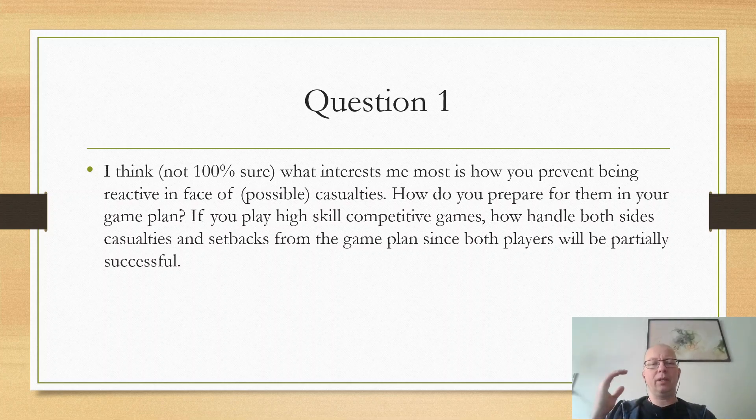I think, I'm not 100% sure, that what interests me the most is how you prevent being reactive in the face of possible casualties. How do you prepare for them in your game plan? And how do you play high-skill competitive games? How both sides have casualties and setbacks from the game plan since both players will be partially successful? Now, there are a few elements of this. One, being reactive in the face of casualties is a psychological reaction. That is, you being afraid of losing your models. That is just something you're going to have to get over because it's not built into the systems. It is a little bit built into the system for Bolt Action in close combat, because close combat, unlike 40K, close combat in Bolt Action is exceedingly deadly because whoever loses gets wiped. So I would suggest for you guys to rewrite that into something that makes a little bit more sense. It's extremely deadly in Bolt Action.